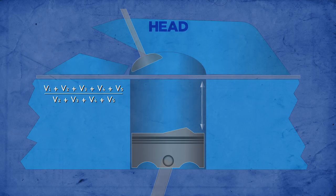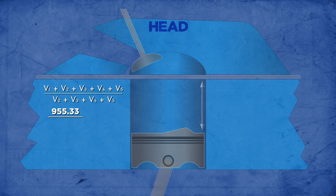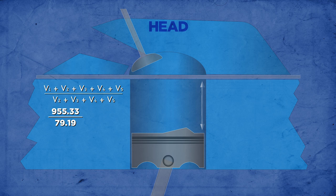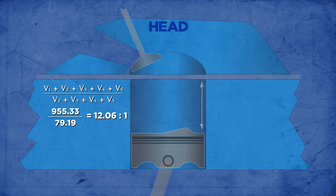With all five volumes known, simply add them together. This is the total volume at BDC and is the numerator in our equation. Next take the same number and subtract volume 1 from it. The result is the volume at TDC and it becomes the denominator in our equation. Now divide these numbers and you have the compression ratio for your engine. Ours is 12.06 to 1.